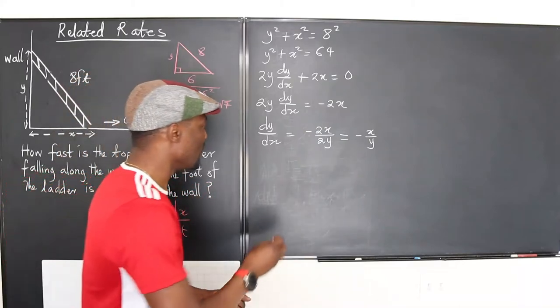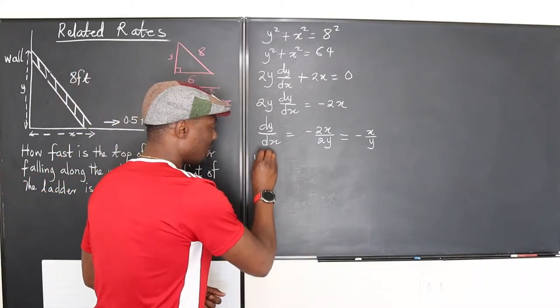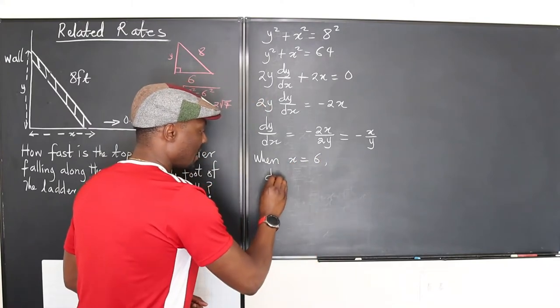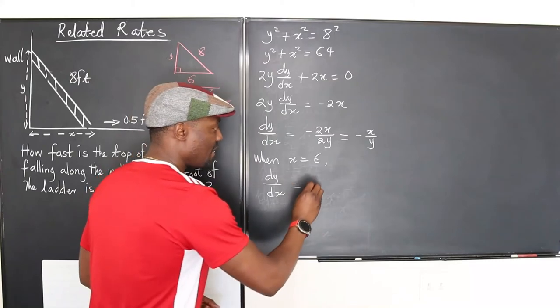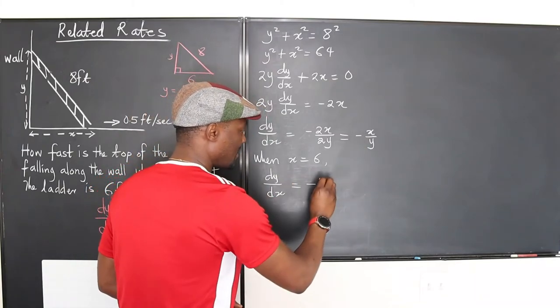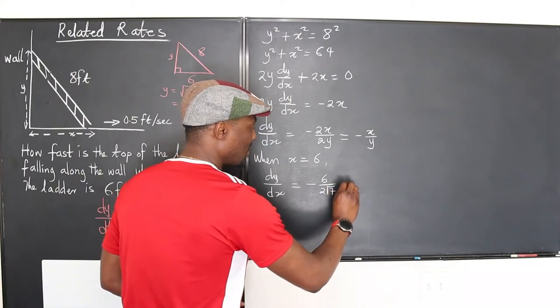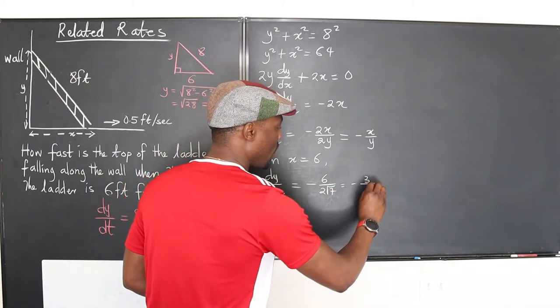We'll just go in here and plug it in. At this point when x equals 6, we say dy/dx is going to be negative 6 over 2√7, which is the same thing as negative 3 over √7.